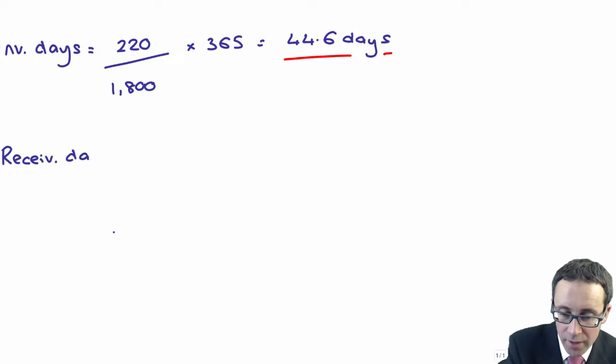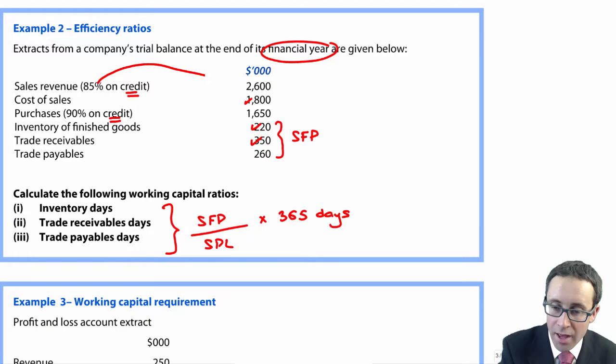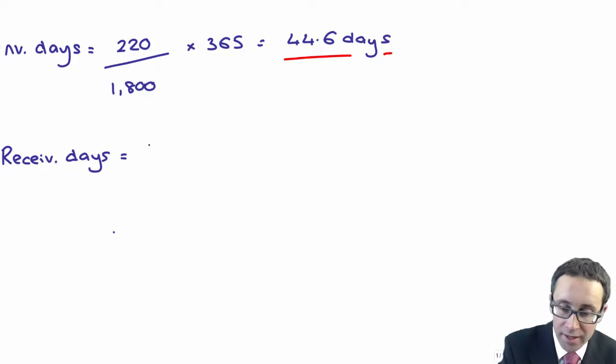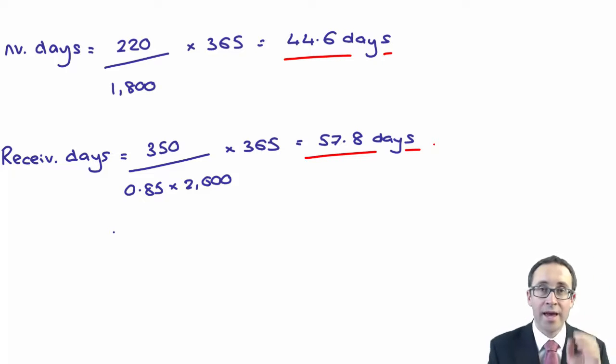You then have your receivable days. That takes your receivables divided by your credit sales. So receivables are 350. The credit sales are 85% of the 2,600. So if I take the 350 divided by 85% of 2,600, and multiply by 365, does that give me 57.8 days?